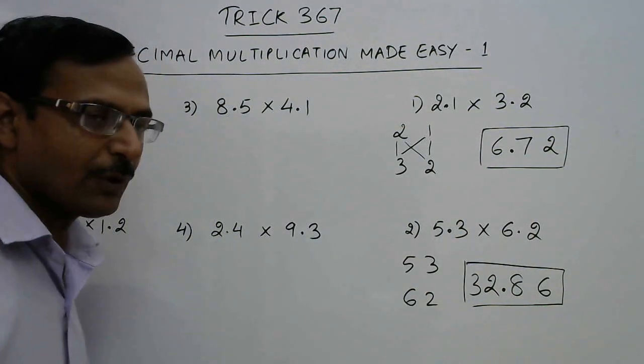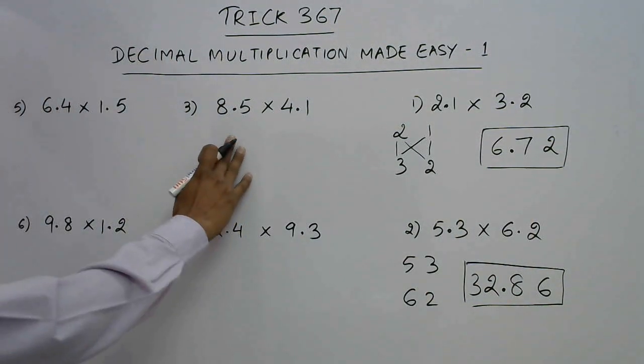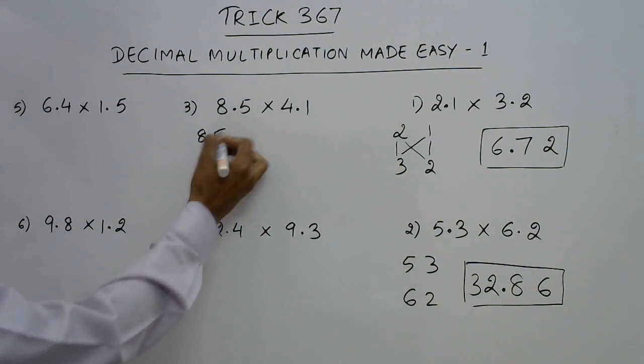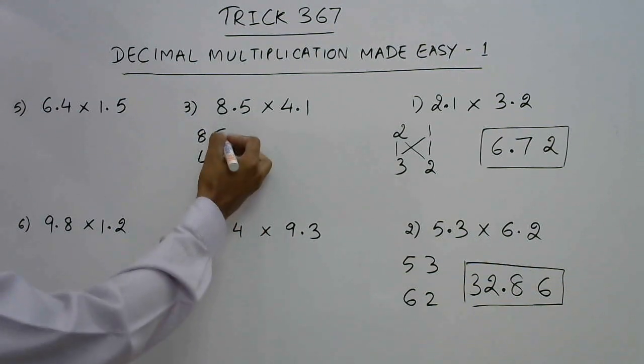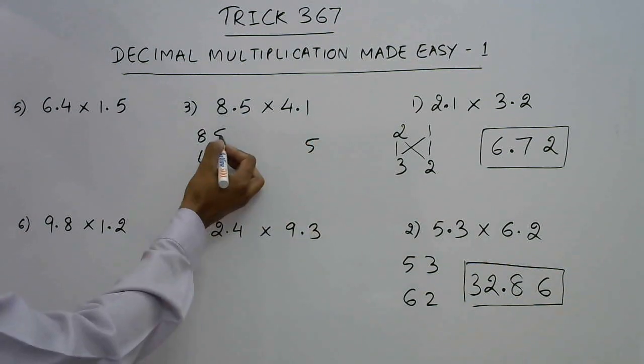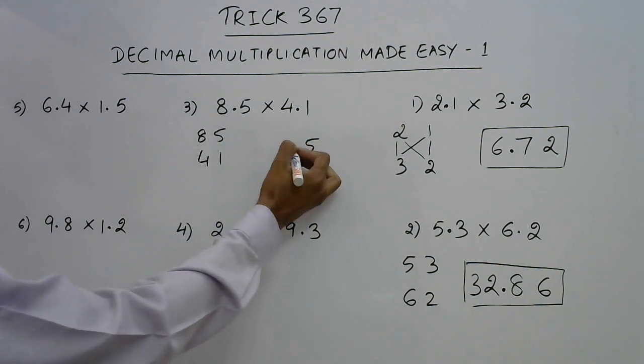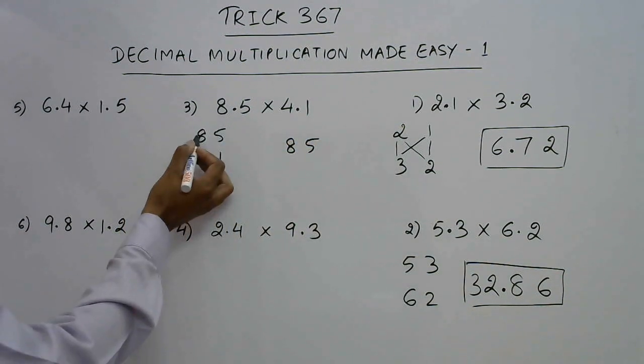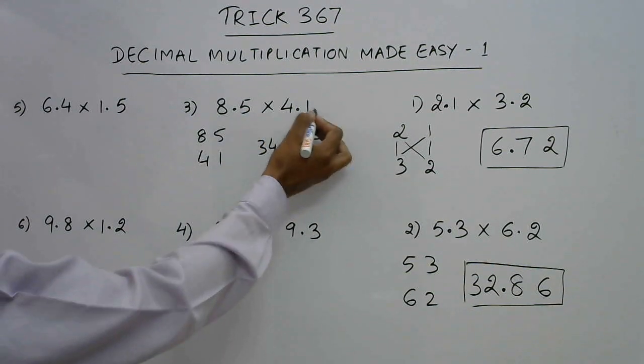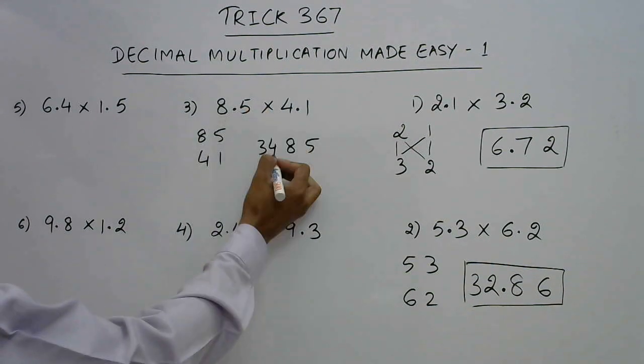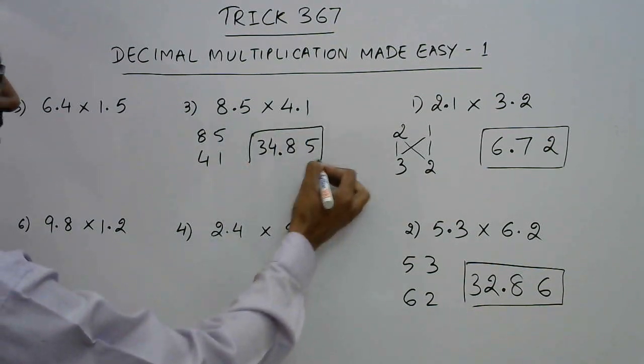Let's practice this method for more numbers. See we have 8.5 and 4.1. Just write 85 and 41, one below the other. 5 ones are 5, you have a 20 plus 8, 28. So you have a 2 carry, 32 plus 2, 34 and again 1, 2 digits after the decimals. So you have 34.85 as the answer.